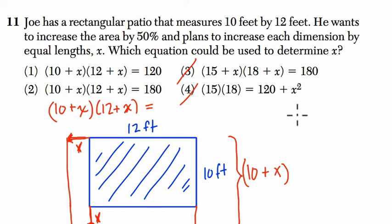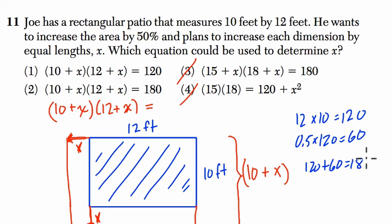Well, basically, the original area was 12 by 10, which is 120. So if we're adding 50%, what is 50% of 120? Well, it's half of 120, or 0.5 times 120, which is 60. So the new patio is going to be 120 plus 60 feet, or 180 feet.